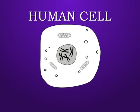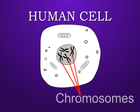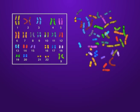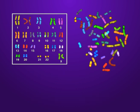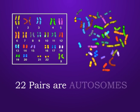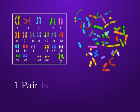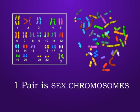This is a human cell. You may see some thread-like structures in it. These are chromosomes. There are 23 pairs, or 46 chromosomes, in a human cell. Out of which, 22 pairs — that is 44 chromosomes — are autosomes, and one pair is called sex chromosomes.